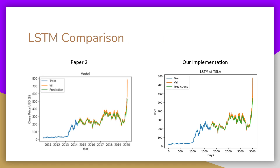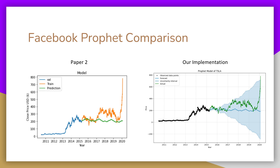For the LSTM, it's again pretty comparable. And for the Facebook Prophet model comparison, the results are also pretty comparable, except in ours we added an uncertainty interval, because that's an option when you use the Facebook Prophet model.